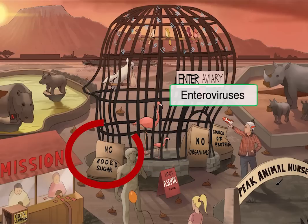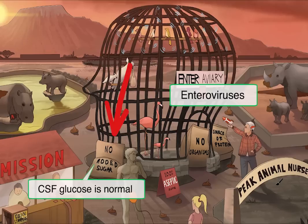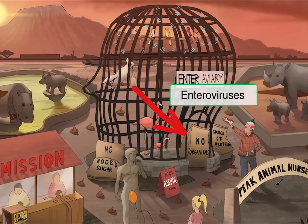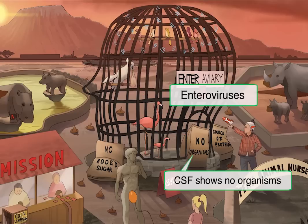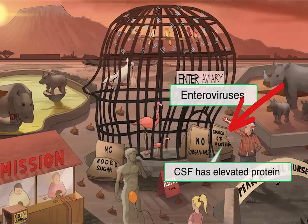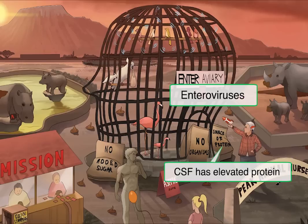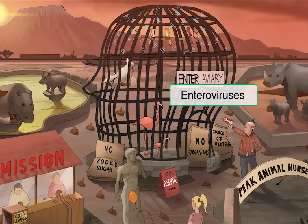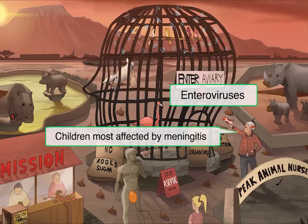We'll add some bags of food scattered around the aviary to help you remember the CSF findings of viral meningitis. On exams, you may be given CSF findings and asked to differentiate bacterial, viral, or fungal. The first bag says the food has no sugar added, meaning glucose levels in the CSF will be normal. It also says there are no organisms in the food, meaning the CSF is aseptic. And the food bags are a good source of protein, meaning protein levels will be elevated. We've also added a child wearing a space helmet pointing a laser gun at the birds — our recurring symbol for meningitis — illustrating that young children are particularly susceptible to viral meningitis caused by enteroviruses.